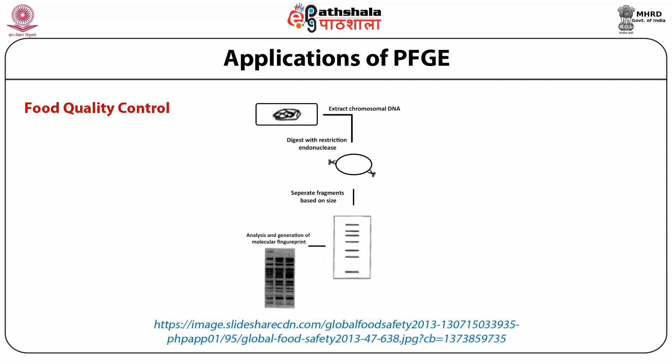Another application of PFGE is in food quality and control. We can determine whether processed or stored food is contaminated with certain pathogens or bacteria. To do this, we take a food sample, isolate the DNA, digest it with specific restriction endonucleases, and run it on PFGE. From a fresh, non-contaminated sample we know the expected band pattern. If there is contamination from any other harmful bacteria, the band pattern changes—as you can see in the picture where DNA from another species is visible—allowing us to determine whether the food sample is contaminated.